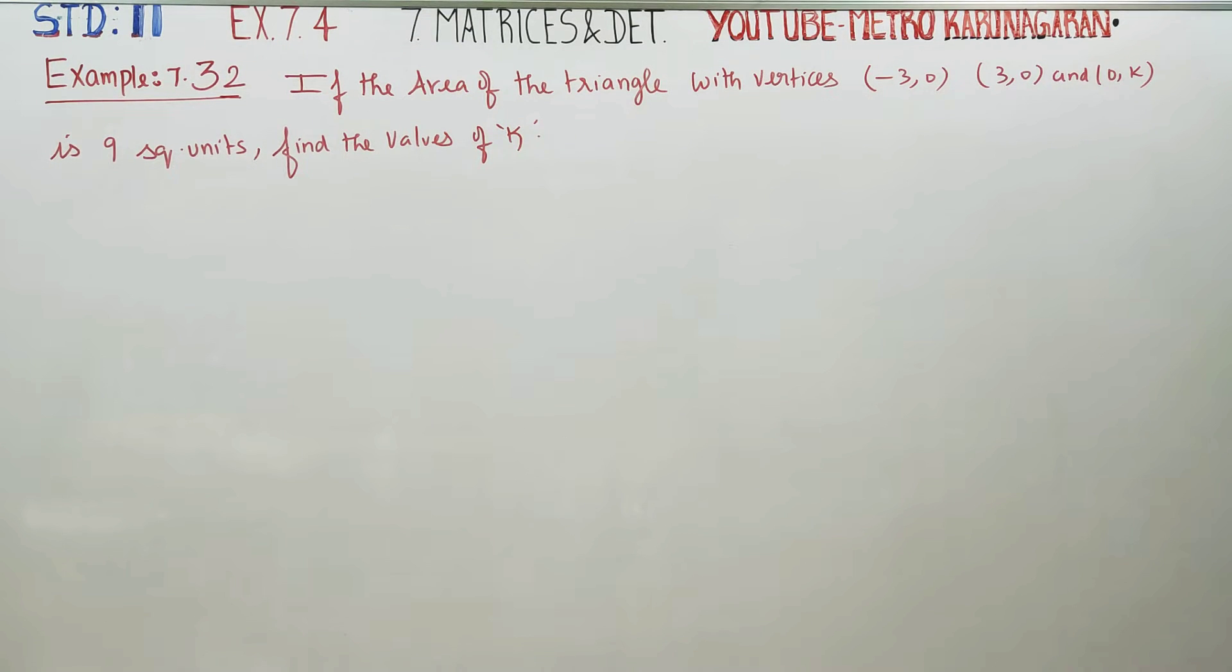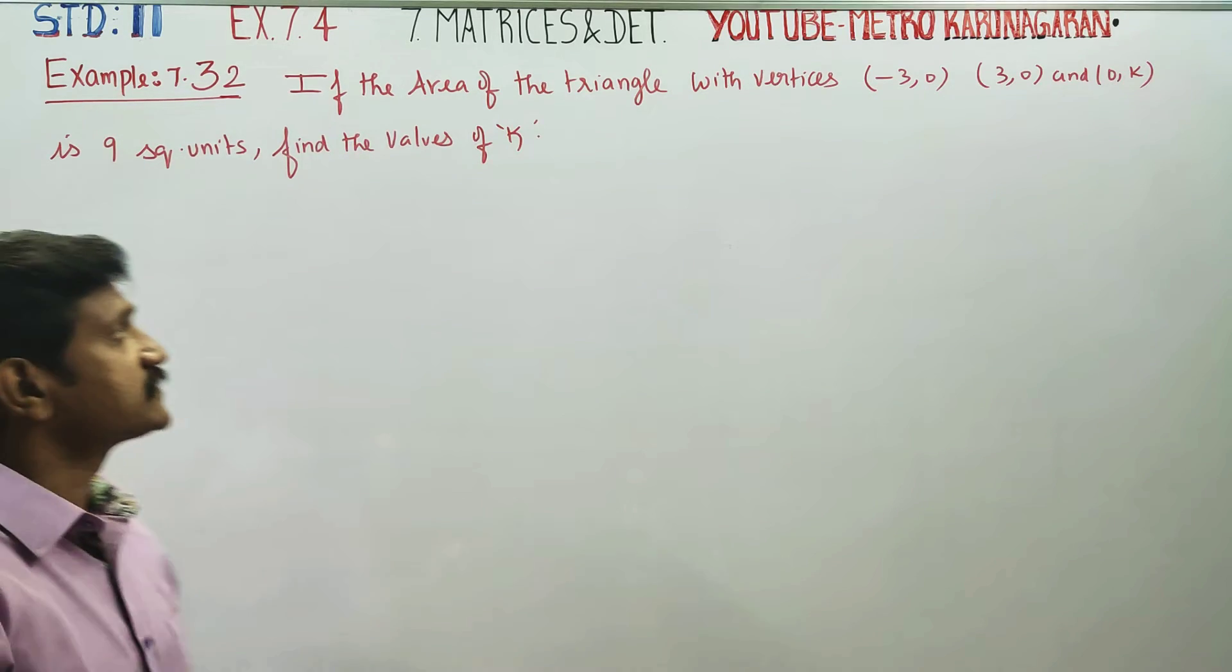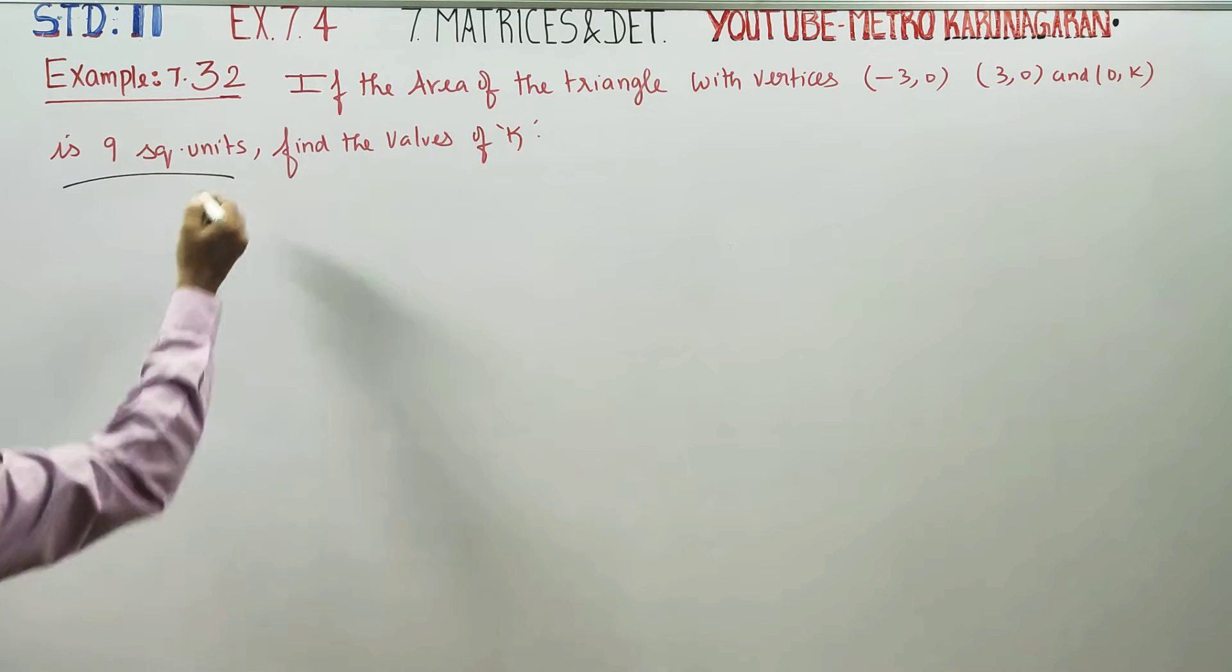Dear Learn Standard students, I am Etro Karanagaran. In example 7.32, if the area of the triangle with the vertices is 9 units, we can find the value of k.